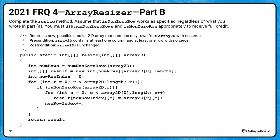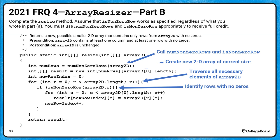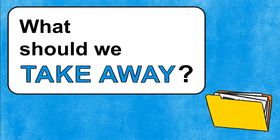Just real quick — the scoring criteria: did you call numNonZeroRows and isNonZeroRow? Did you create an array of the correct size? Did you traverse all necessary elements? Did you identify the rows with no zeros? Did you maintain the index correctly? And did you copy all and only the appropriate rows into the new array? If you did all that, you're going to be in great shape.